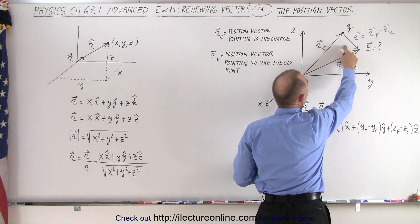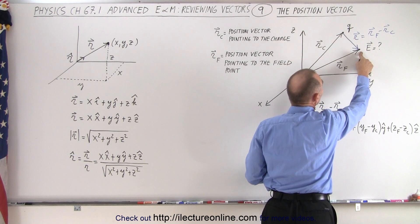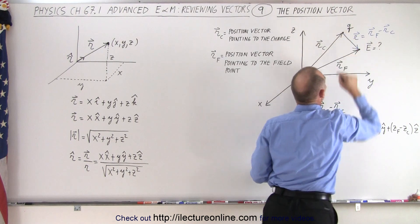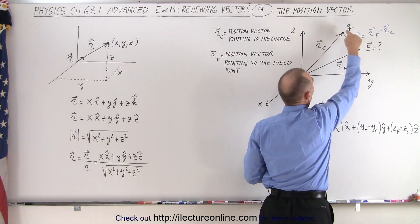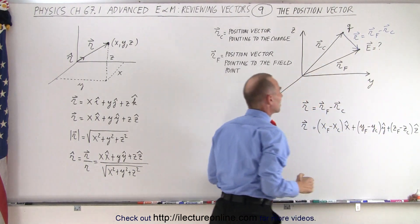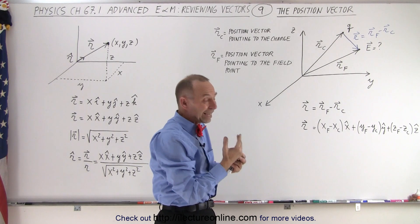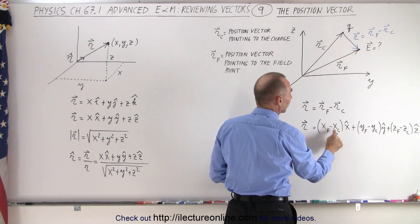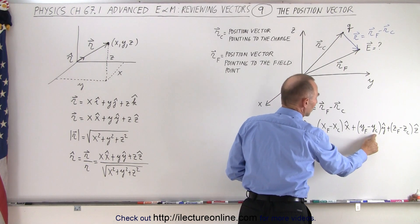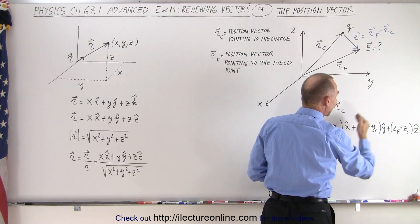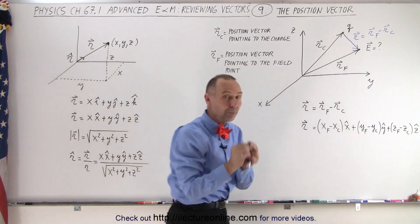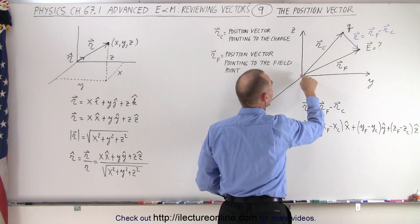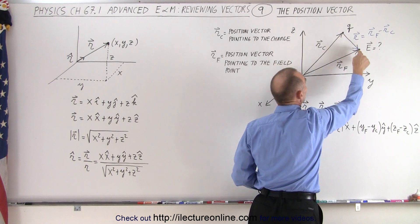If we want to calculate the position vector from the charge to where the electric field is at, we simply draw the vector by taking the difference: the position vector to the field position minus the position vector to the charge position. So it's simply a vector from the charge to the field, which is rf minus rc. In terms of their components — the x, y, and z components of both where the charge is located and where we want to calculate the field — we take the difference: x component of the field minus x component of the charge, y component of the field minus y component of the charge, z component of the field minus z component of the charge, in the x, y, and z directions. That's how we get the vector that points from the charge to the location of the field.